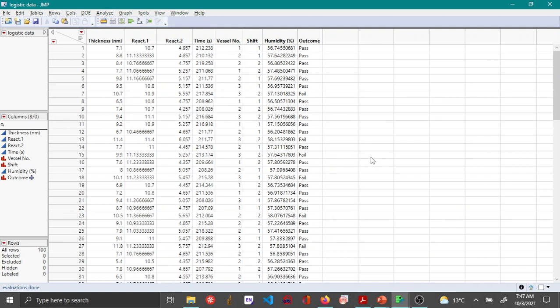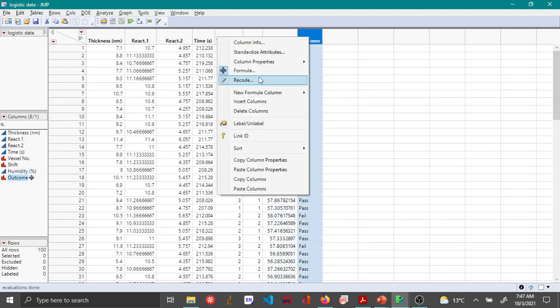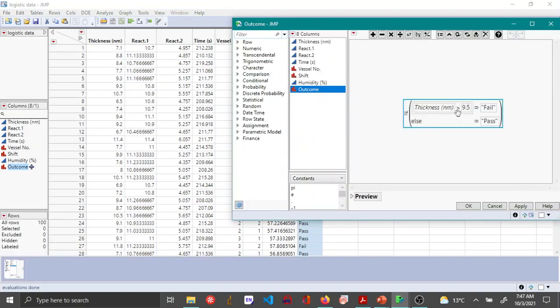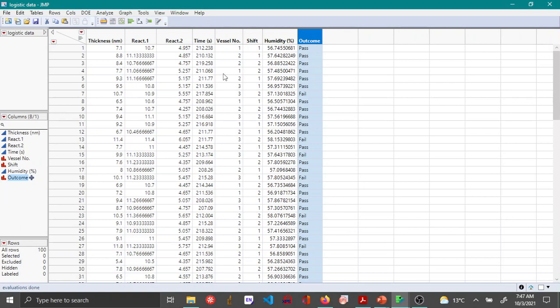Here I have the thickness data that I've been using in my previous videos, but here I have this outcome variable which is a two-level categorical variable. I'm interested in seeing how the outcome of the thickness depends on humidity. The outcome was determined by a formula - a conditional statement where if your thickness is greater than 9.5 then it's considered a fail, else it is a pass.